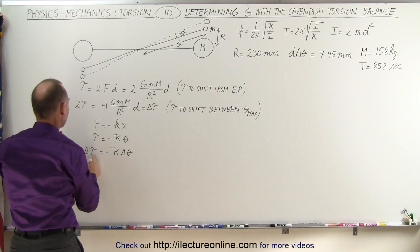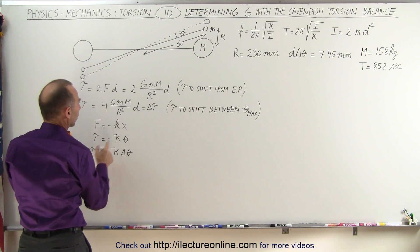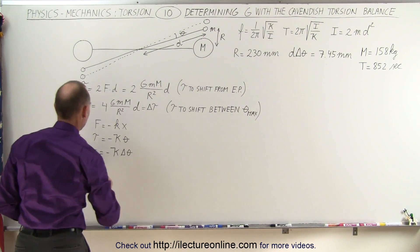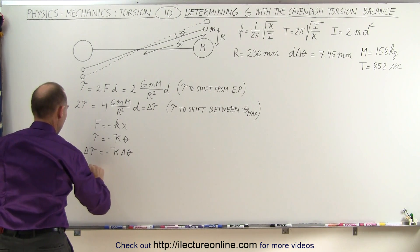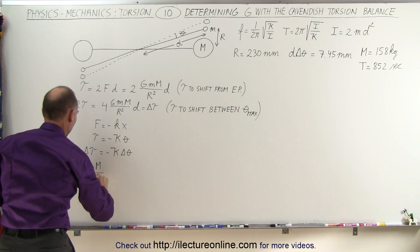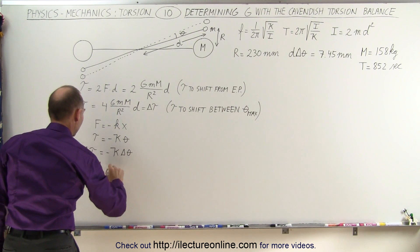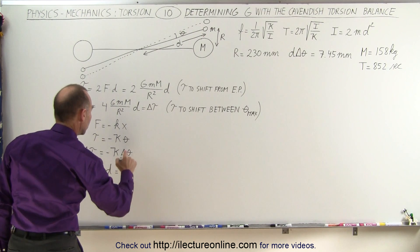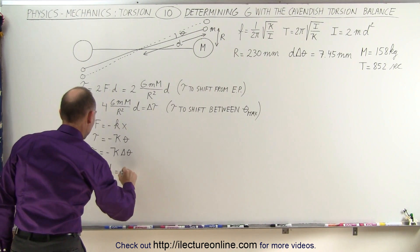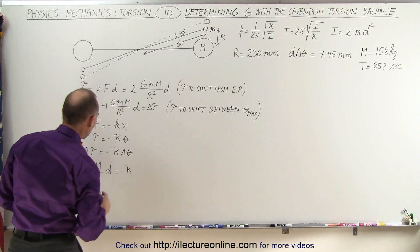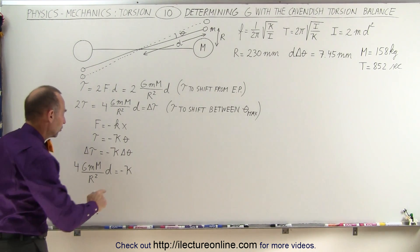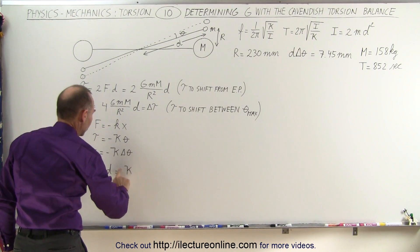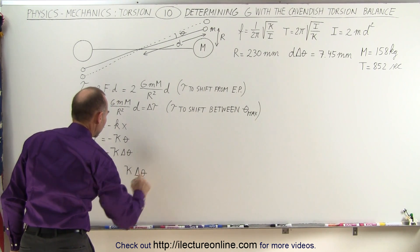So what do we do next? Well, we're going to replace delta tau, the delta torque, by what that is equal to right here. So we can write this as 4 times GM big M divided by the radius squared times D is equal to, and that would be Kappa. And of course, it doesn't matter if it's minus Kappa or positive Kappa, we're simply looking for the magnitude, so we're going to drop the negative sign, times the change in theta.